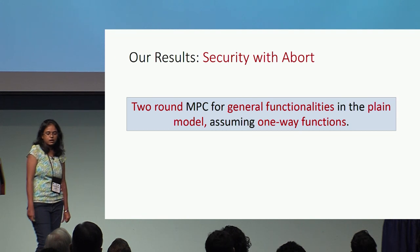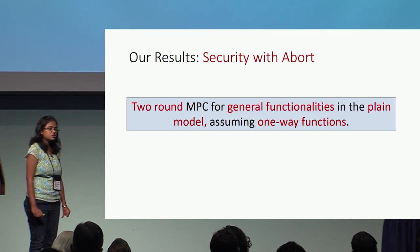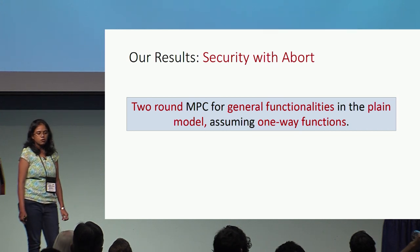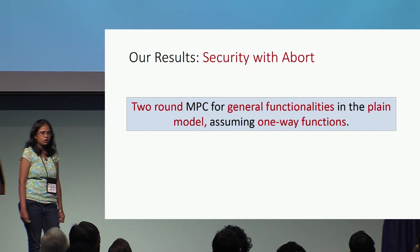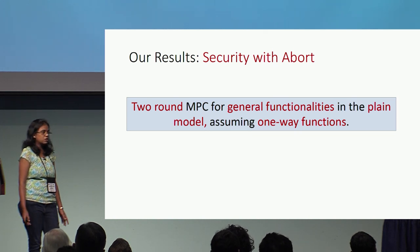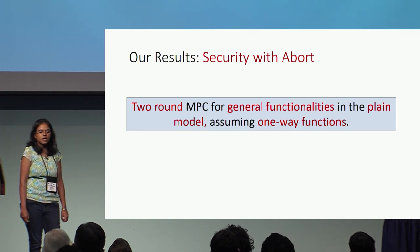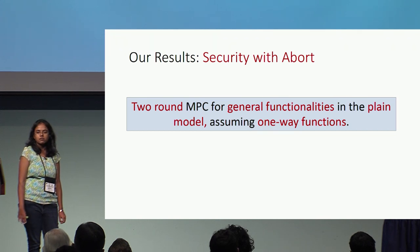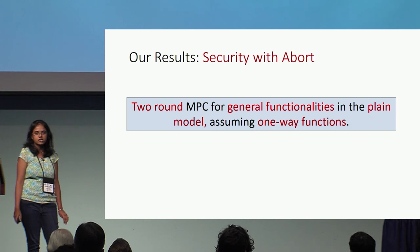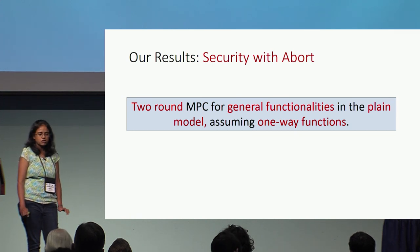Now I'll present our results. For security with abort, we show there exists a two-round protocol for general functionalities in the plain model, assuming only one-way functions. All known constant round approaches, including ours, are based on randomized encodings. Currently, information-theoretic randomized encodings are only known for NC1 circuits, so based on our current understanding, for general functionalities this may be the best we can hope for.